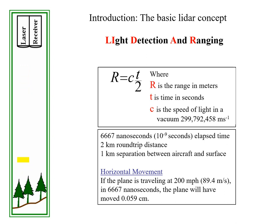So how does Light Detection and Ranging work? Here's a little cartoon. At the top you have a laser and a receiver. A pulse of laser light is generated by the laser, and that light travels downward towards some object and then back up and into the receiver. The range is the time in seconds it takes for the light to be emitted, reflected, and then absorbed by the receiver.